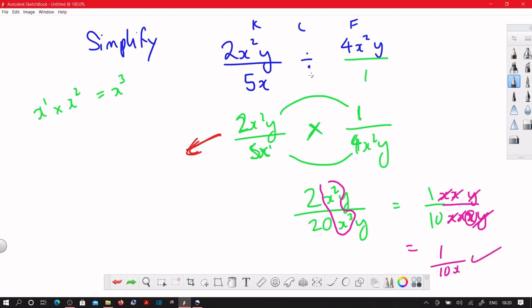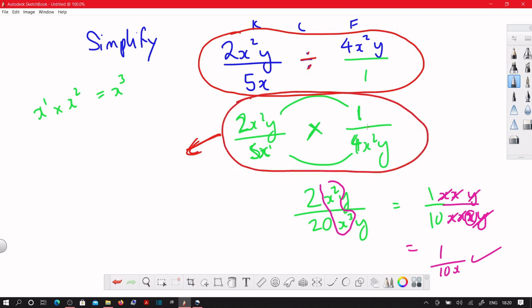There is a quicker way of doing this question. I have to do the keep change flip because there is a division. So I end up getting this. And I know for this one here, the numerator will stay fixed. The denominator will stay fixed because we've already done the flipping part. So these are locked in position.